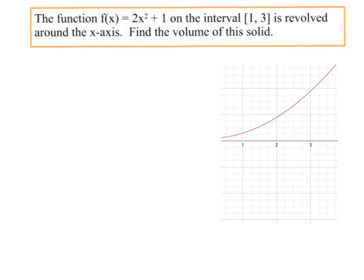In this video we're going to look at a lot more volume stuff, and in many cases we're going to set up the integral but rely on the fact that you could actually integrate it. This first one: the function f(x) = 2x² + 1 on the interval from 1 to 3 is revolved around the x-axis. Find the volume of the solid. So we're looking at the shape from 1 to 3, and if we revolve it around we get something that looks like that.